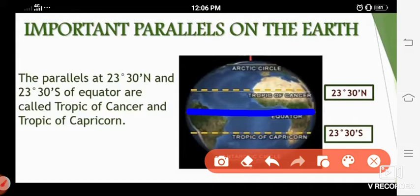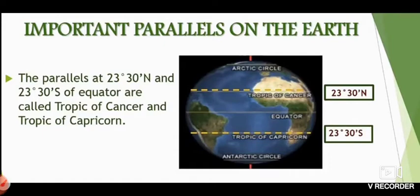The other parallels upward and downward are decreasing in size. The next parallels we are going to study are at 23 degrees 30 minutes north and 23 degrees 30 minutes south of the equator — these are called the Tropic of Cancer and Tropic of Capricorn. In the diagram you can see the measurements are in a box, and those two parallels on the globe are shown with dotted lines. The upper dotted yellow line is the Tropic of Cancer and the lower dotted yellow line below the equator is the Tropic of Capricorn.